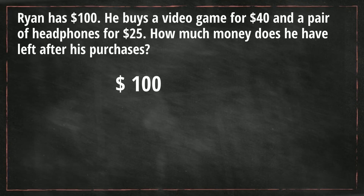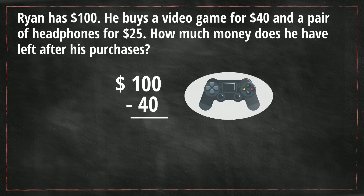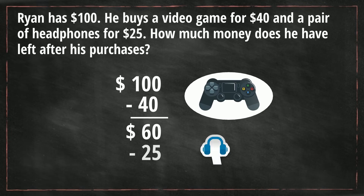I'm going to take $100 minus $40, which is what he spent for the video game. After that, he has $60 left over. Now he has $60 and he buys a pair of headphones for $25, so I'm going to take $60 minus $25. When you subtract those two, that gives you $35. So after purchasing the video game and the headphones, he has $35 left over.